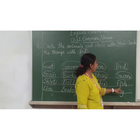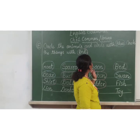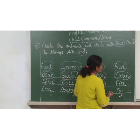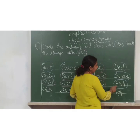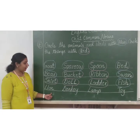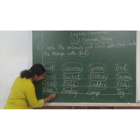F-I-S-H. Fish. Fish is? Yes — animals and birds category. Here you have to circle with blue color. L-I-O-N. Lion. Here you have to circle with blue color.